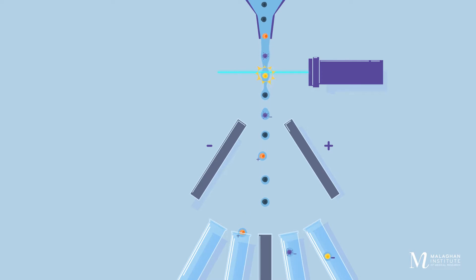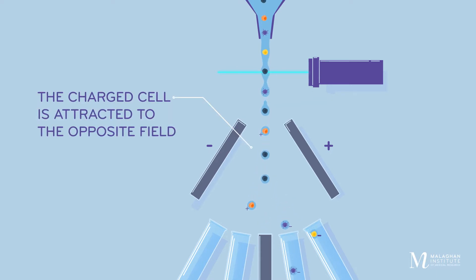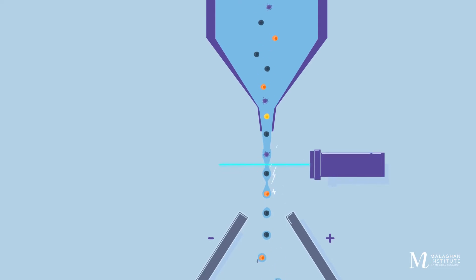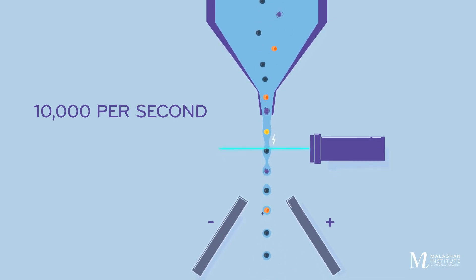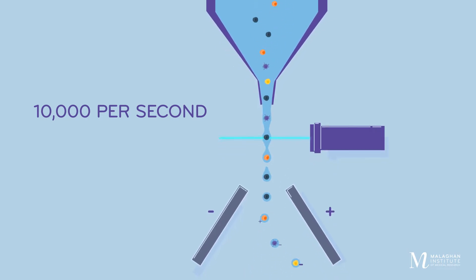When a cell with the right traits passes the laser, a charge is applied to the stream. The droplet then breaks off and travels through an electric field. If the droplet is negatively charged, it's drawn towards the positively charged plate and vice versa. Cell sorting happens extremely quickly, at rates faster than 10,000 cells per second.